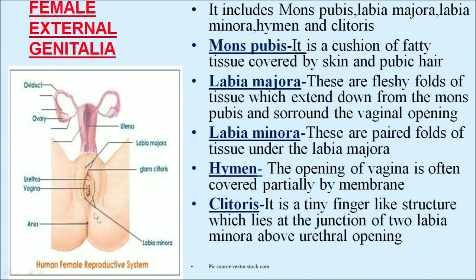Mons pubis is a cushion of fatty tissue covered by skin and pubic hair. Labia majora are fleshy folds of tissue which extend down from the mons pubis and surround the vaginal opening. Labia minora are paired folds of tissue under the labia majora. The hymen is a membrane that often partially covers the opening of the vagina. The clitoris is a tiny finger-like structure which lies at the junction of the two labia minora above the urethral opening.